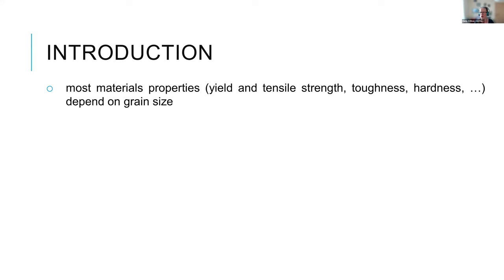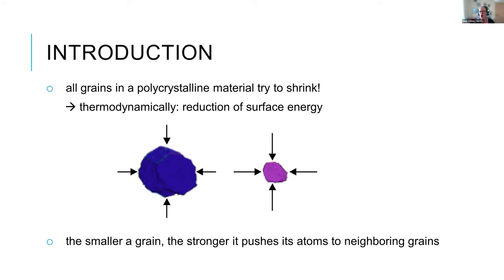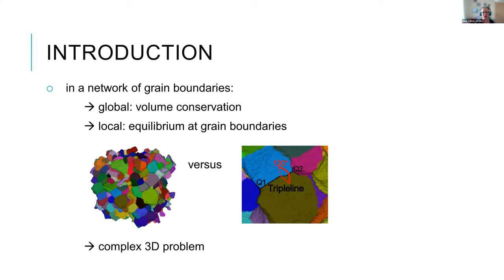Most materials' properties depend, in a polycrystalline material, on the grain size. Only if we can understand what's going on and really control the microstructure do we have a key to improving materials properties. One of the problems we usually have is thermally activated grain boundary migration. In a polycrystalline material, all grains try to minimize their energy. If I have just one isolated grain, this means that the grain will shrink — surface energy reduction.